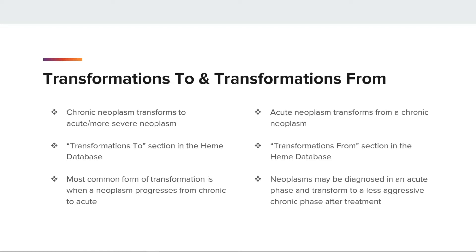Let's look at transformations to and transformations from. A chronic neoplasm can transform to an acute neoplasm, which is more severe. We will know if a chronic neoplasm can transform to acute by looking in the transformations to section in the heme database. The most common form of transformation is when a neoplasm progresses from chronic to acute. We also have an acute neoplasm transforming to a chronic neoplasm, and these are found in the transformations from section in the heme database. Neoplasms may be diagnosed in an acute phase and transformed to a lesser aggressive chronic phase after treatment. The inclusion of the terms chronic and acute does not mean the neoplasm may transform; these terms refer to the indolent or aggressive nature of the neoplasm.